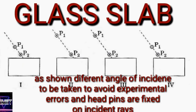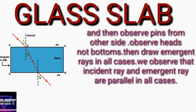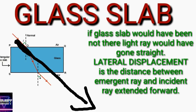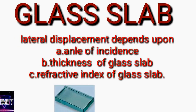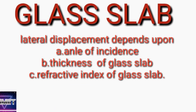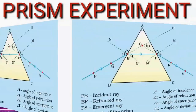Coming to the glass slab experiment. The apparatus required: glass slab, pin set, white paper. For different angles of incidence, keep pins on one side and see from the other side. Whenever you see both the pin heads, draw the refracted ray. Finally, the result is that the incident ray and emergent ray are parallel. Do it the same for five times to avoid experimental errors. In all cases, you will get the incident ray parallel to the emergent ray. Also, the lateral displacement concept is very important — it depends upon the angle of incidence, thickness, and the refractive index of the glass slab. Lateral displacement is the distance between the incident ray extended forward and the emergent ray.